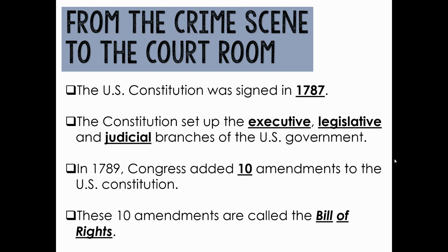We're going to go back and do a little bit of history here, so this is going to feel like a history class for a little bit. If you'll remember from U.S. history, the U.S. Constitution was signed in 1787, and the Constitution set up the executive, legislative, and judicial branches of the United States government. Just two years after the Constitution was signed, Congress added 10 amendments to the Constitution, which we call the Bill of Rights.